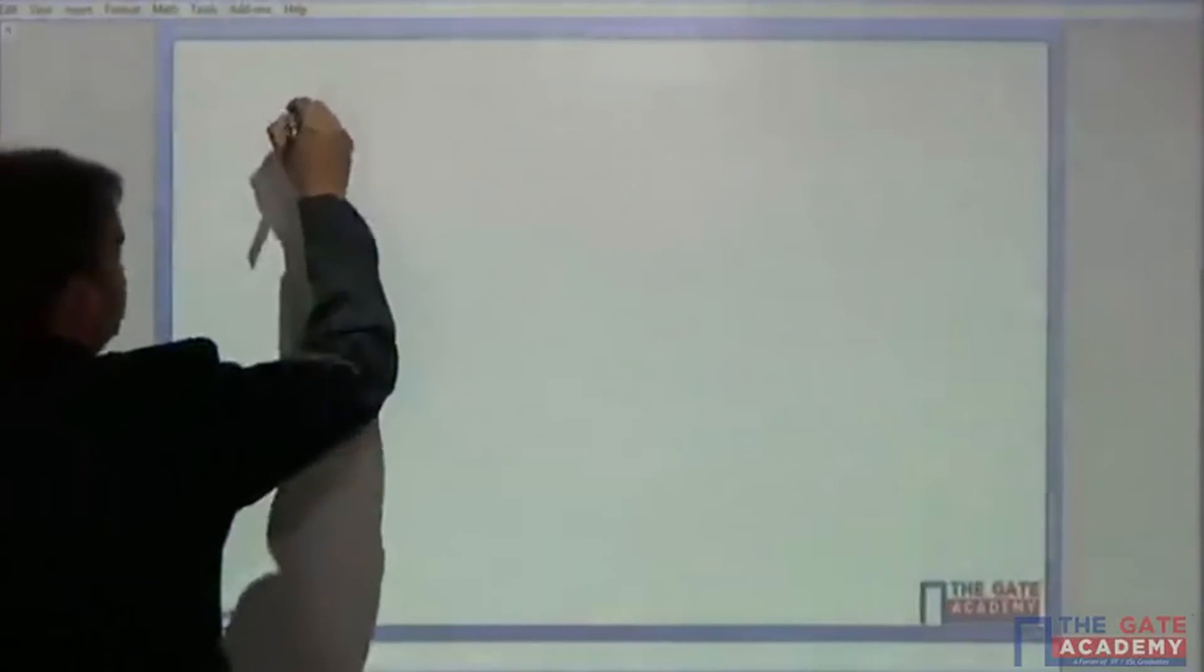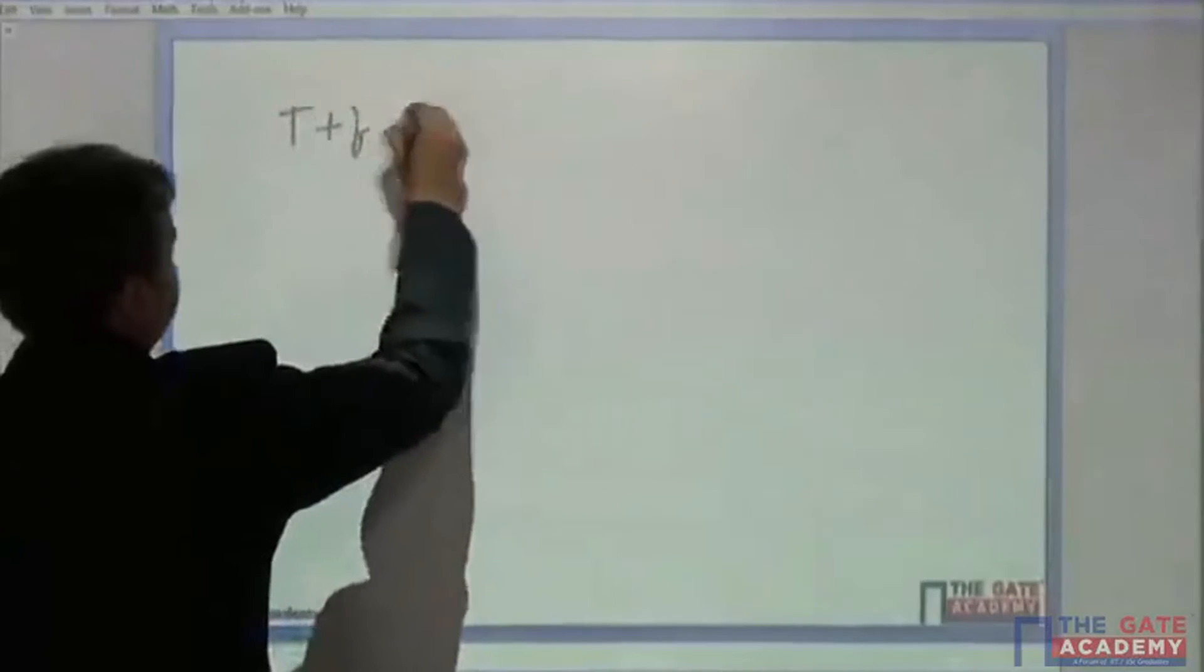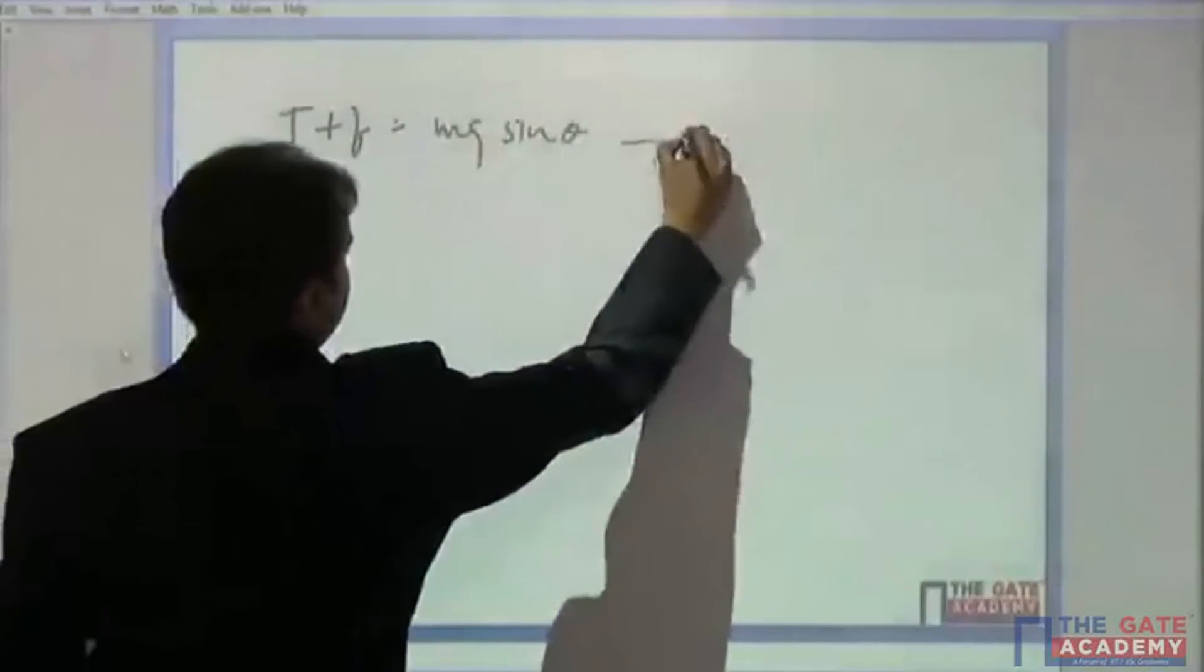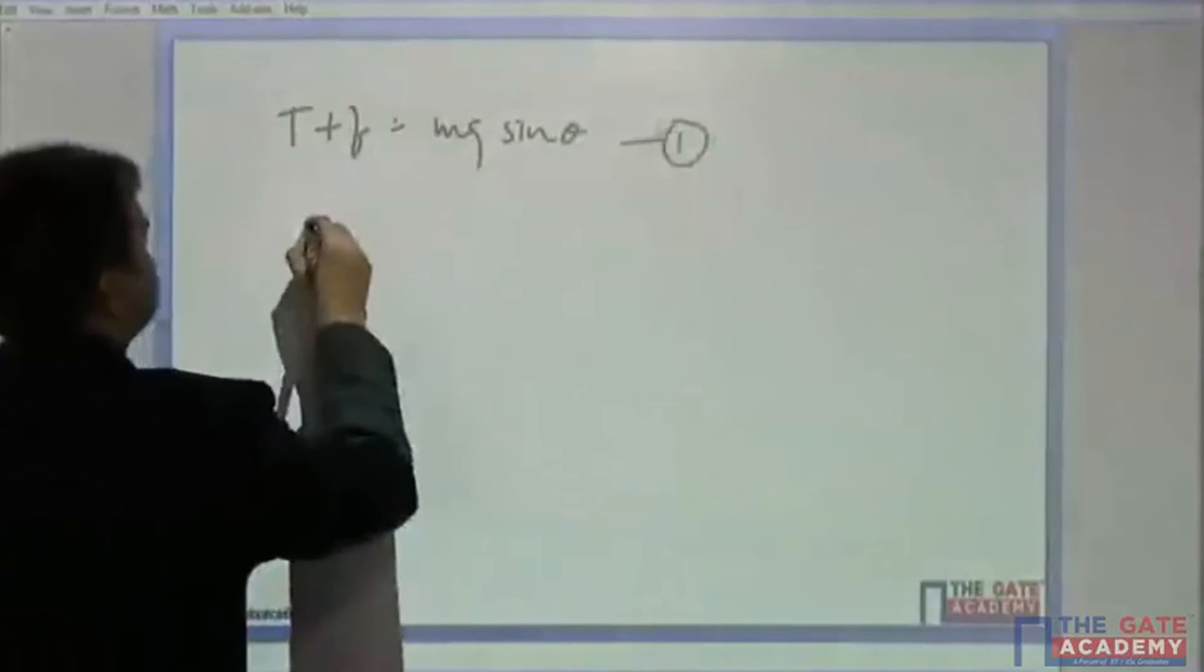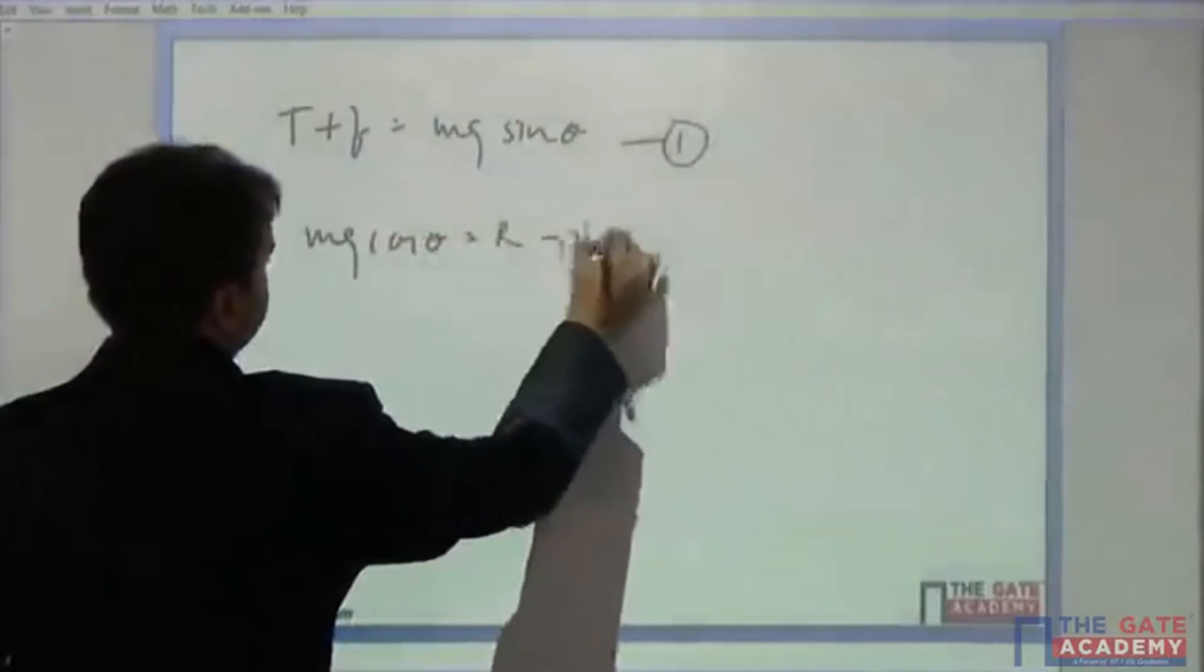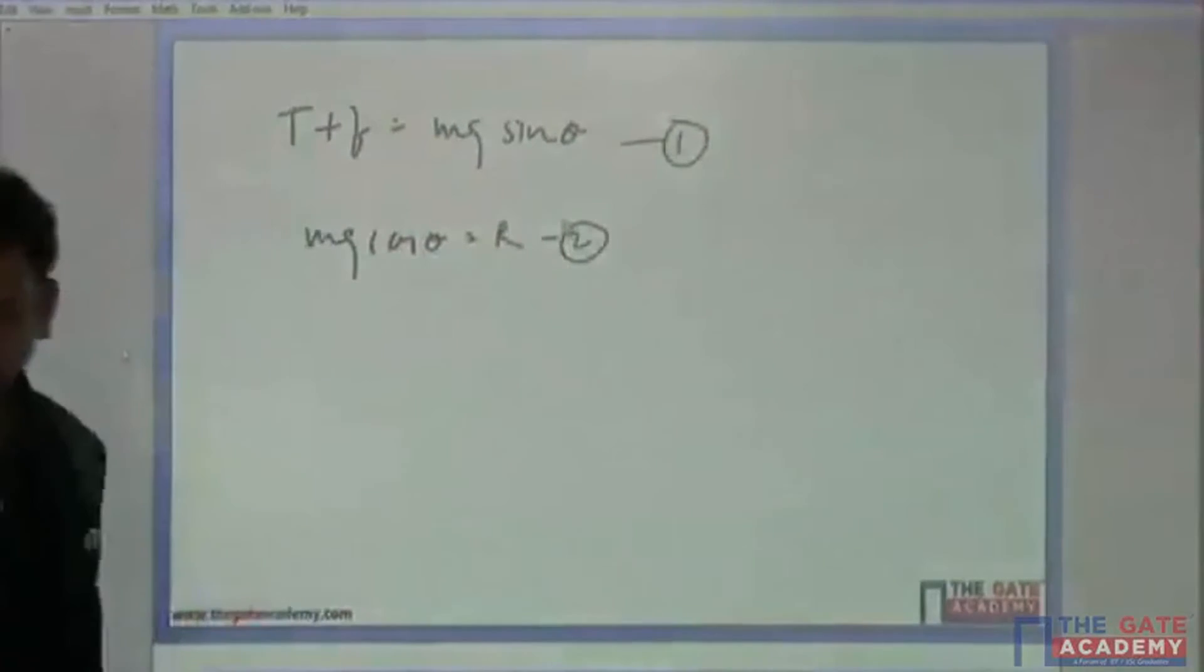So we can simply write it as T plus f equals mg sin theta, being equation number 1, and mg cos theta equals R, equation number 2.